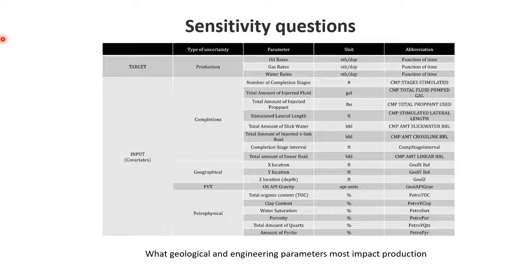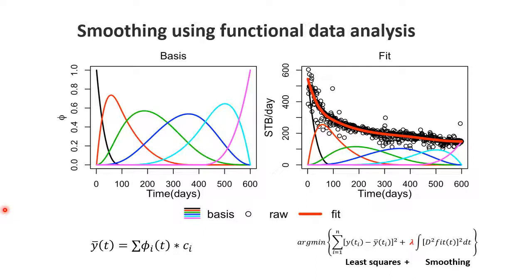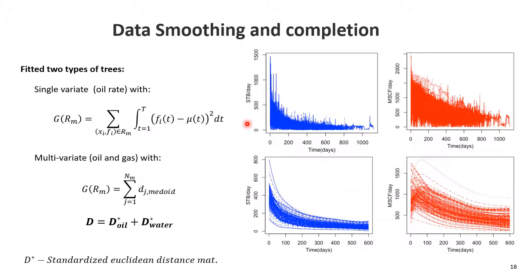First we need to remove noise from the data using spline smoothing, also called functional data analysis. We write the oil rate as a linear combination of fixed basis spline functions, and add a smoothing term penalizing the second derivative to prevent violent oscillations. After this process, we have smoothed oil rates and gas rates as nice, clean functions with minimal loss of information.